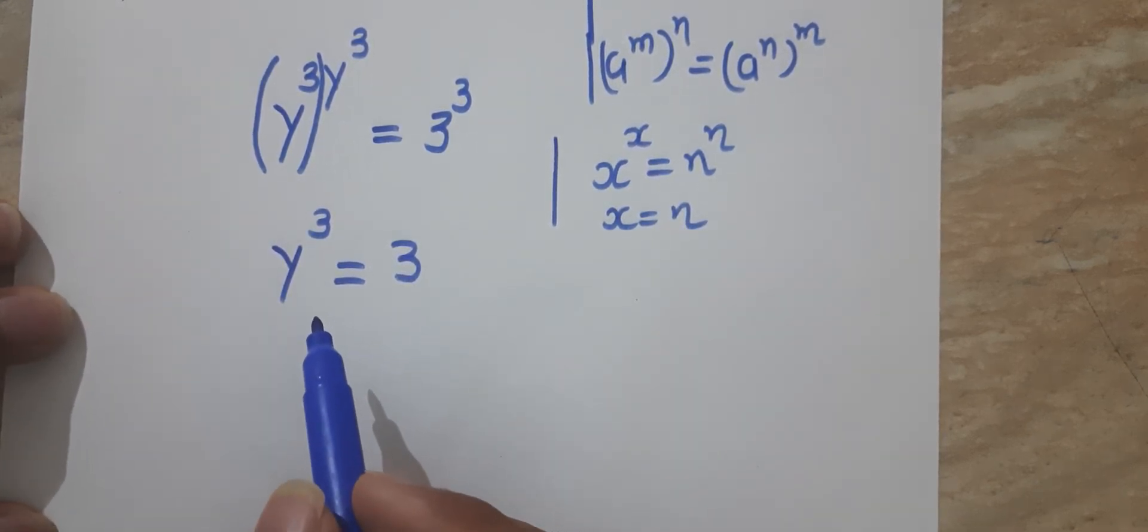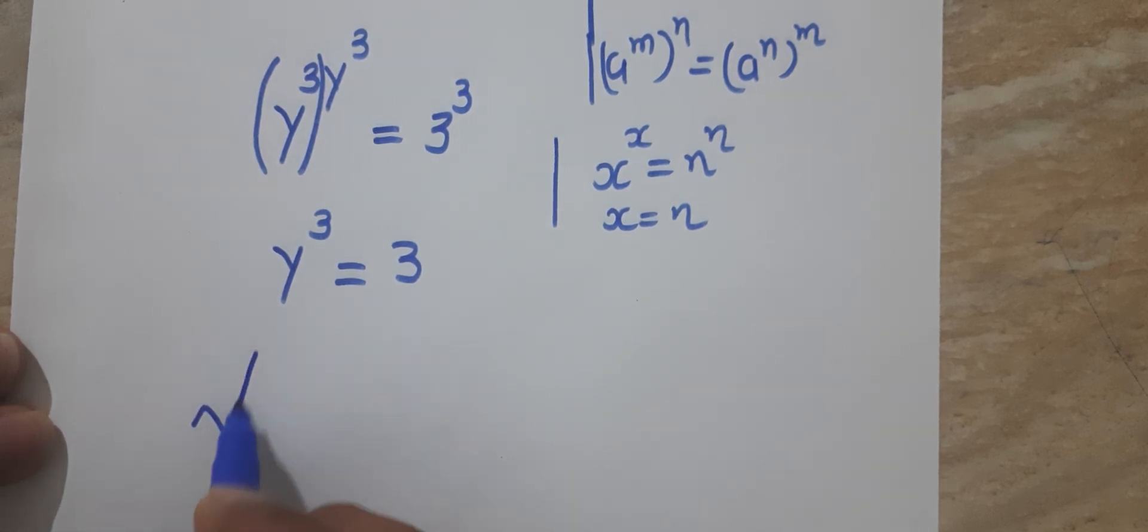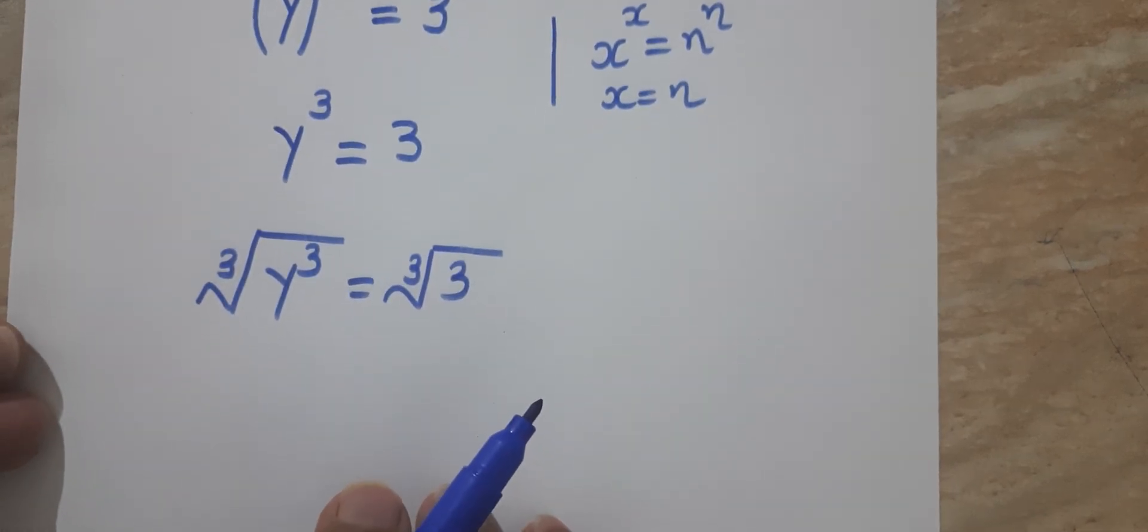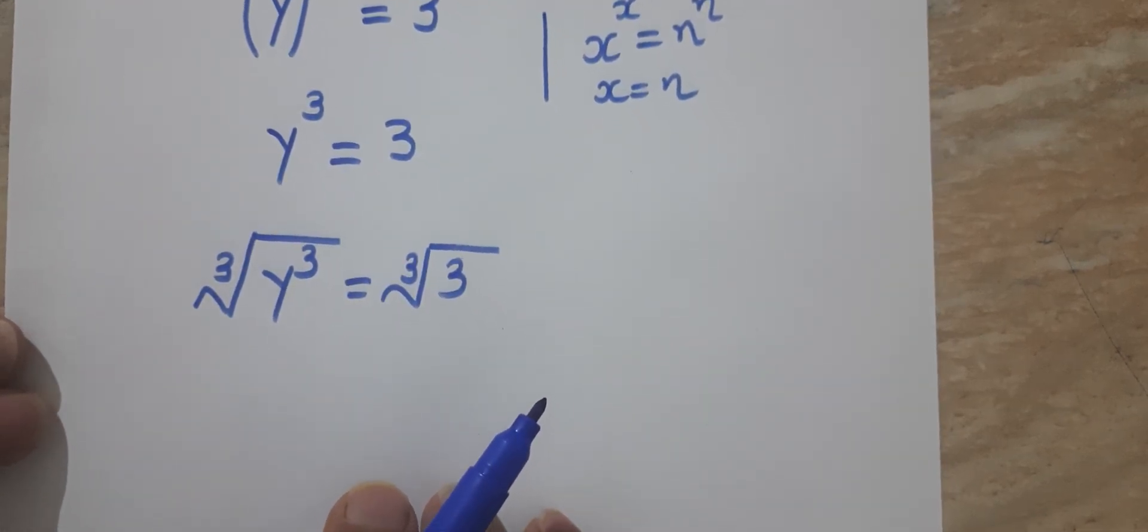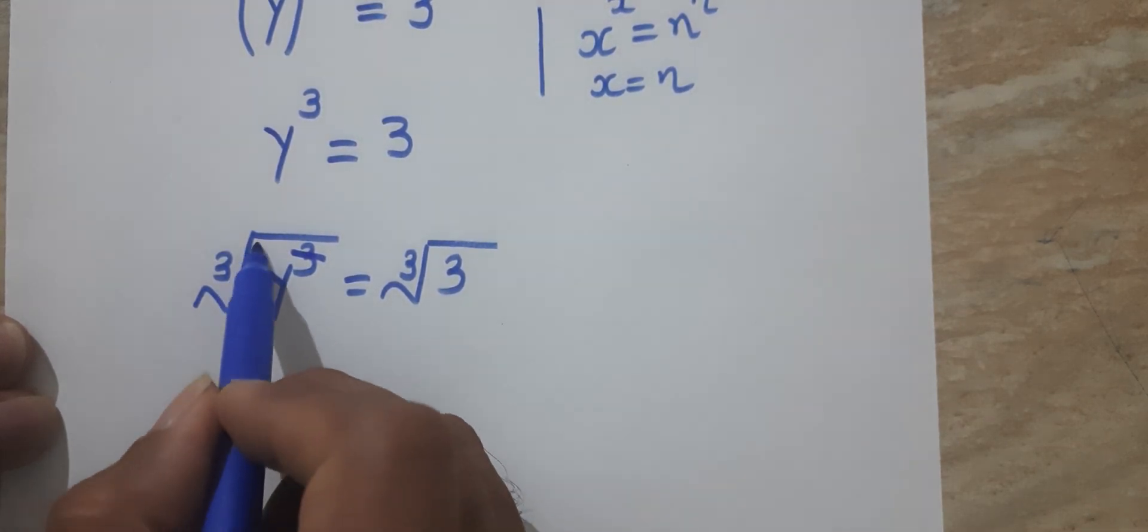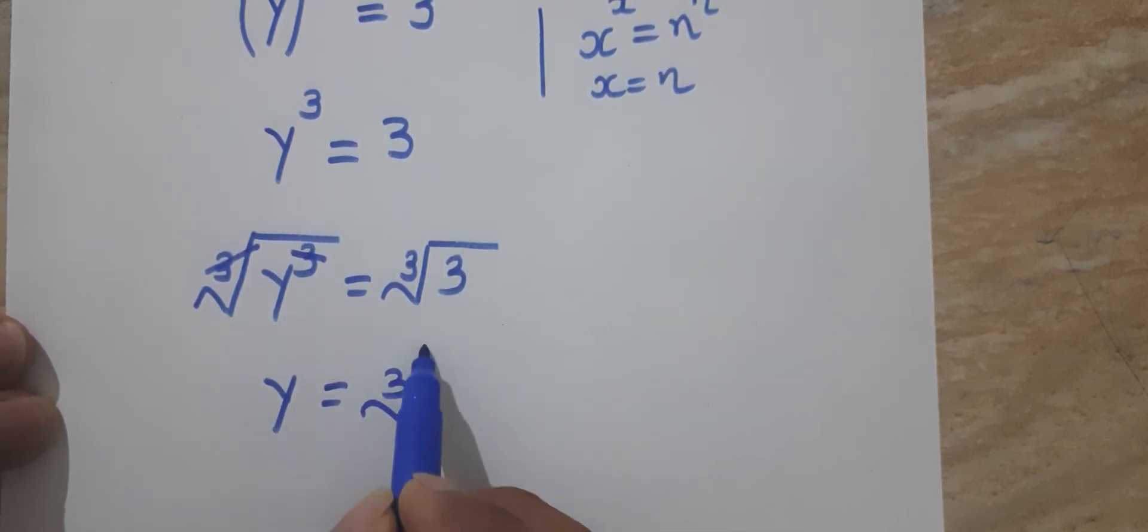Now we will apply cube root to both sides. ³√(y³) = ³√3. We can remove the y³ and the cube root, so y = ³√3. We found this value of y.